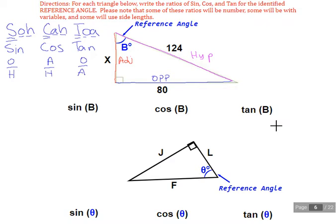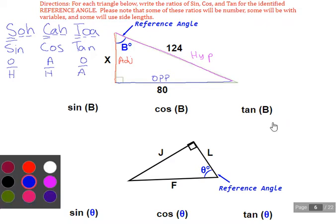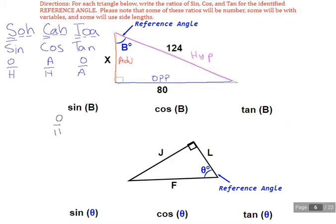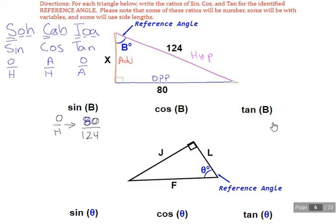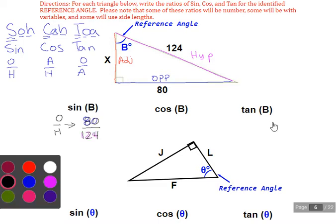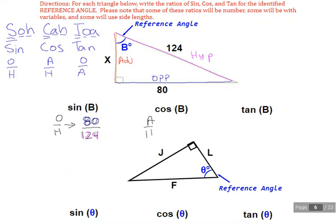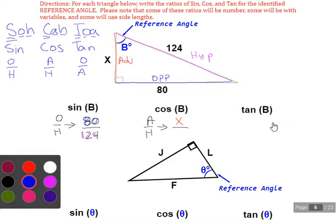And so if we want sine of angle B, we need opposite over hypotenuse, which in this case should be 80 over 124. Cosine is going to be A over H, so adjacent in this case is going to give us X, and then hypotenuse is going to be 124.